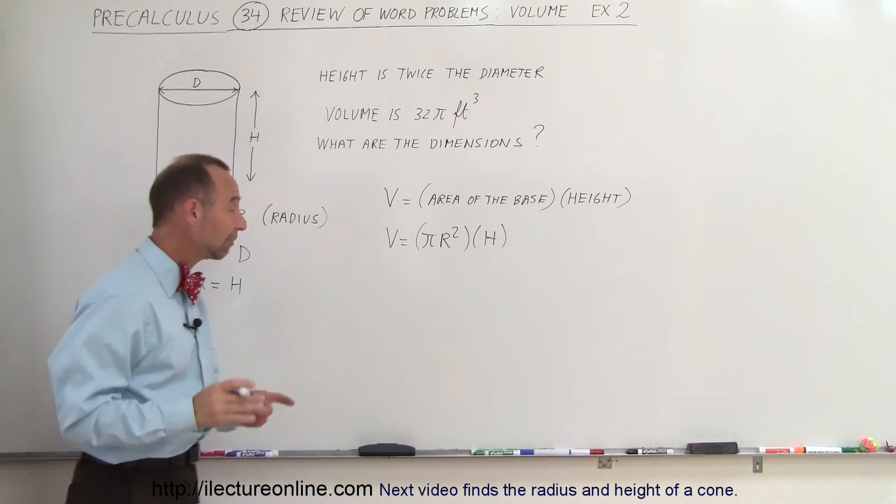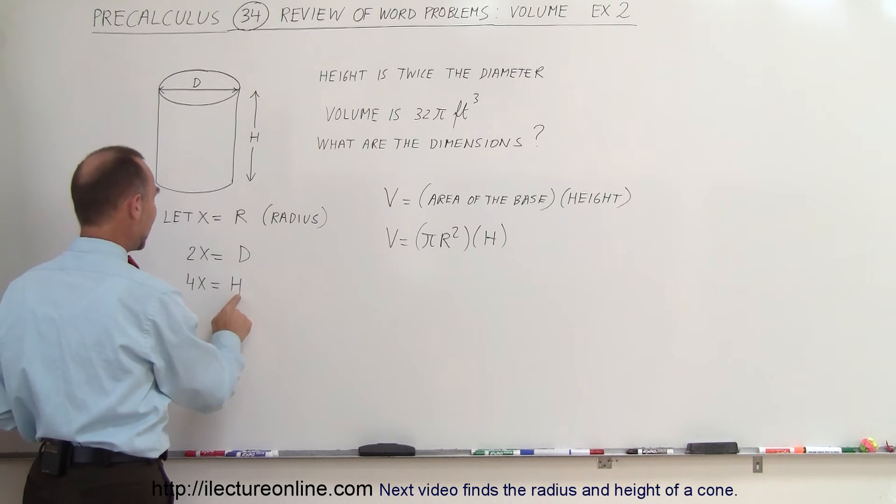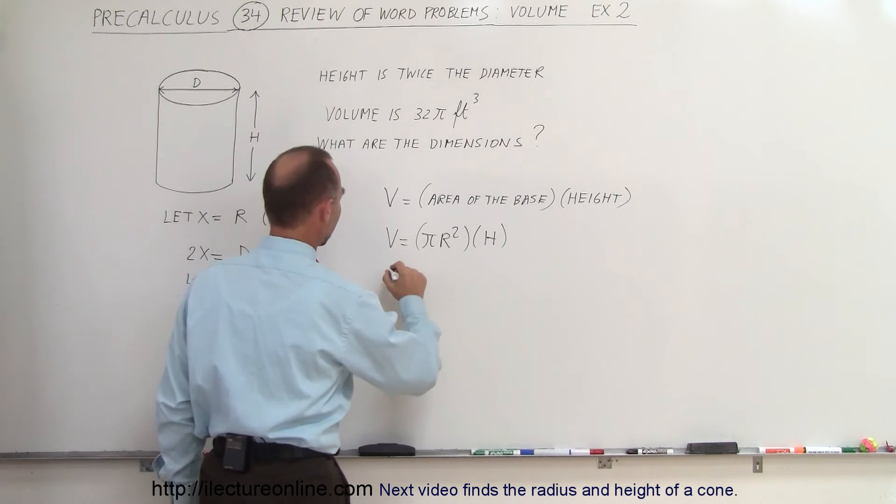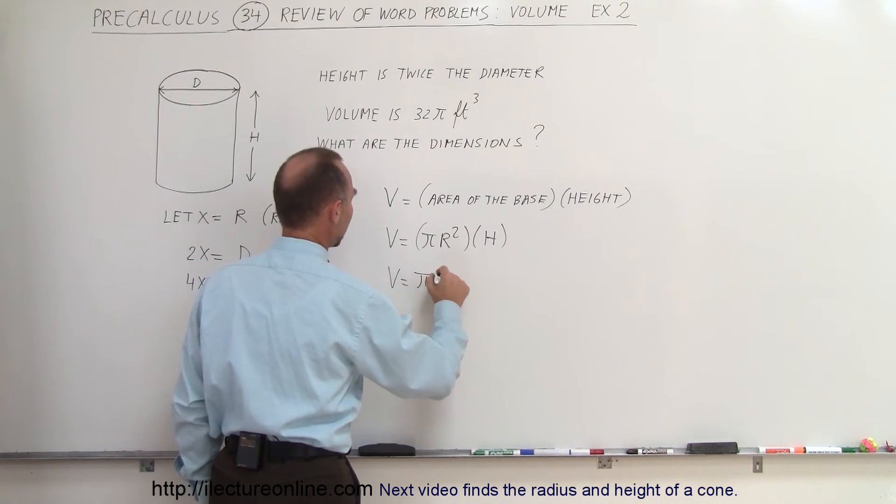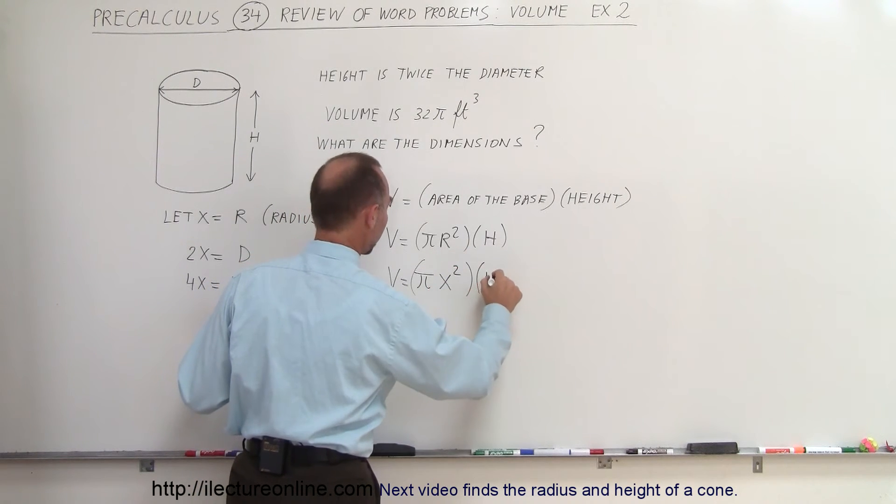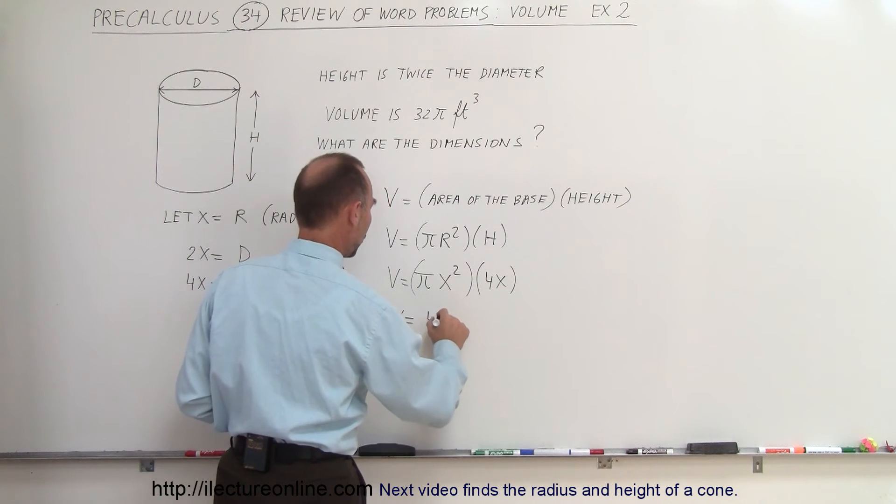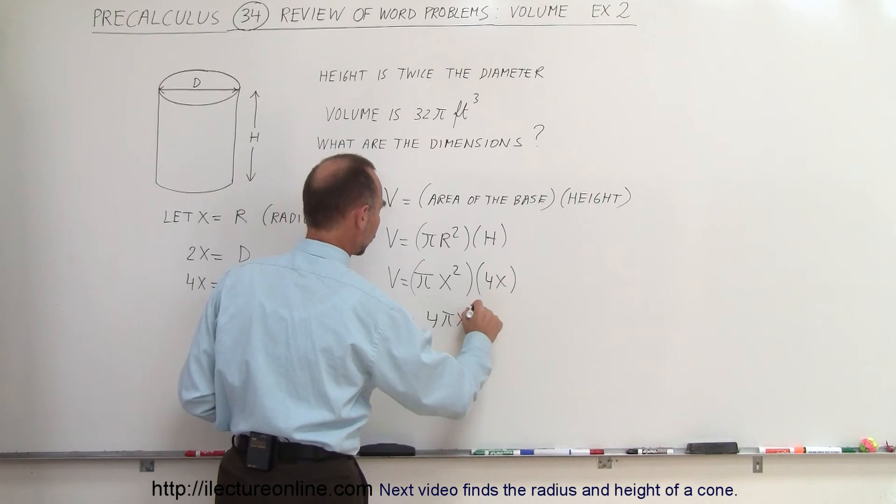Now we can express the volume in terms of x because we have the translation right here. We know that r is equal to x and h is equal to 4x. So we can write that the volume is equal to π times x² times h, and h would be 4x, which means that the volume is equal to 4πx³.